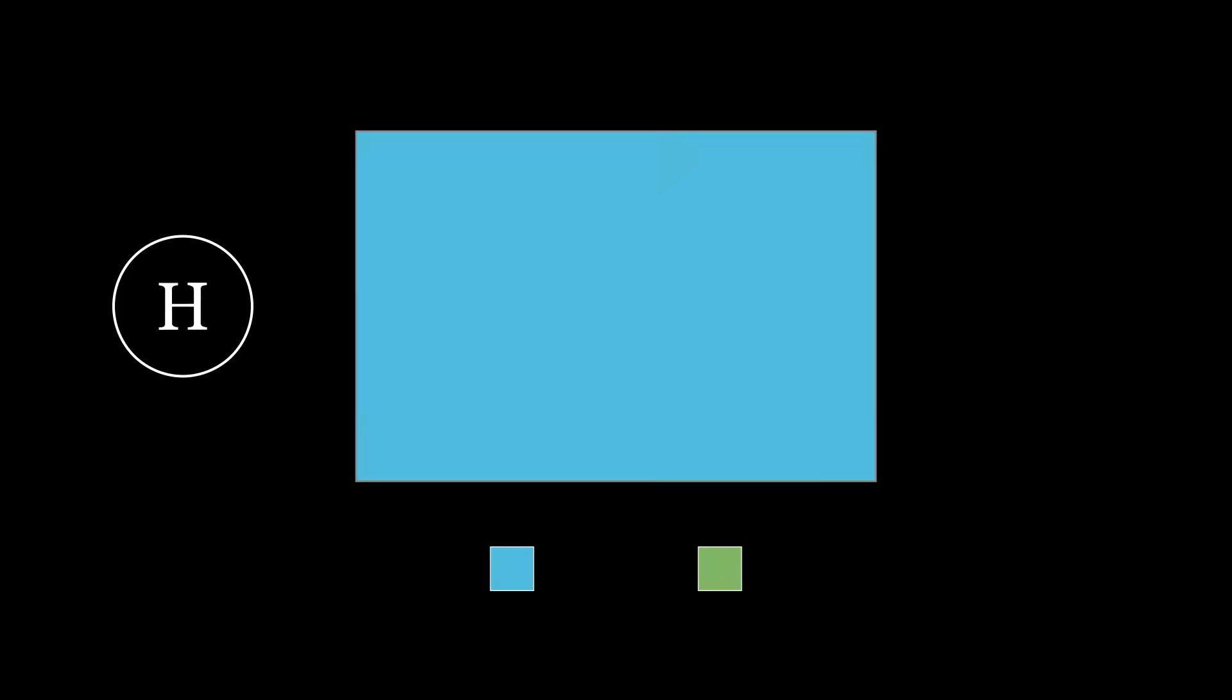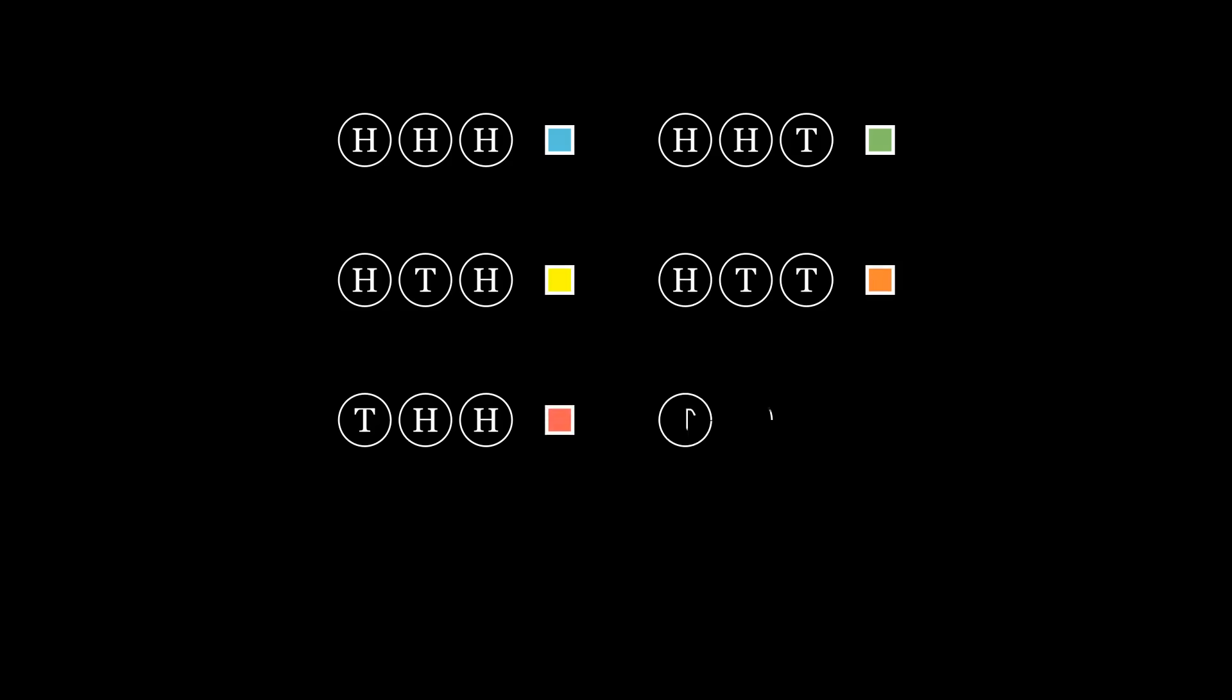If it were two options it would be easy. Heads for blue and tails for green. Even any other power of two would be fine. Say if I had eight colors I could flip the coin three times and assign each outcome to a color. But three, that's where things get interesting.